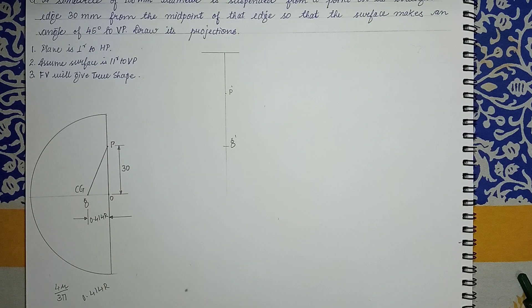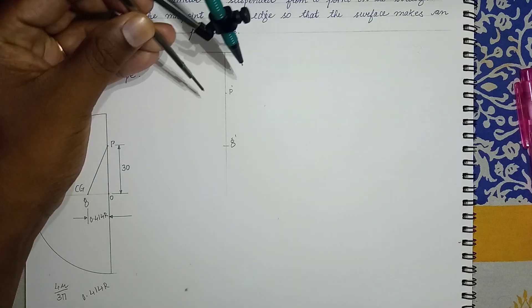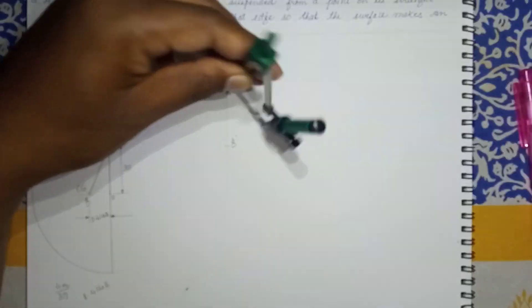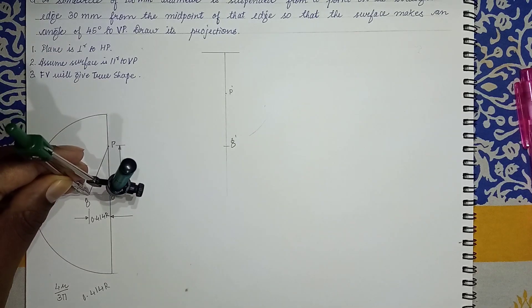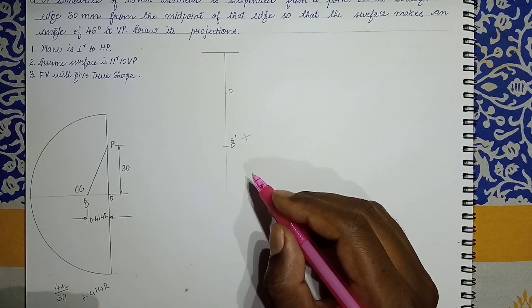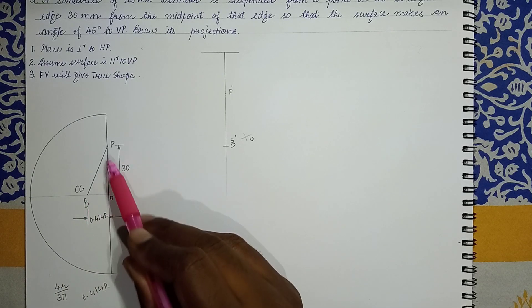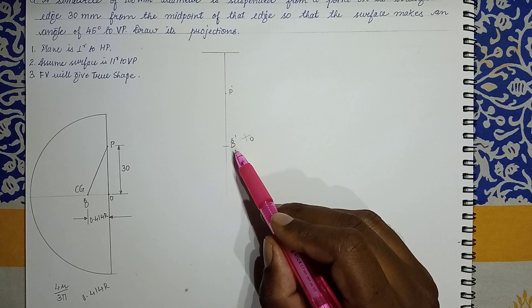This is a bit challenging that most students face this problem, but it is really easy if you understand the basic construction. To get point O initially, we take distance OP in the compass, place the center at point P and mark an arc. Similarly we take distance GO in the compass, place the center at G and mark the arc. We get point O over here. Now we know that GOP is a right angle triangle, so GO and PO are at 90 degrees.